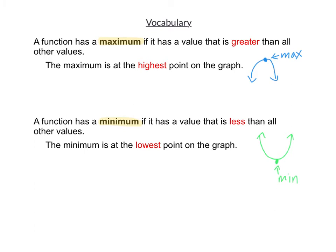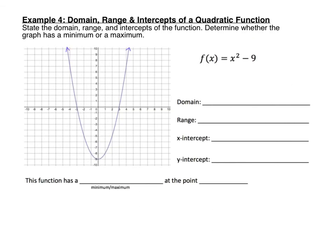You're going to be asked first to tell whether the graph has a minimum or a maximum, then label the ordered pair where it's located. Here's our first example of a quadratic function. We're asked to state the domain, range, and intercepts of the function, then determine whether the graph has a minimum or a maximum. All quadratic functions are going to be the U-shaped graph like this. The special name for the graph of a quadratic is called a parabola.